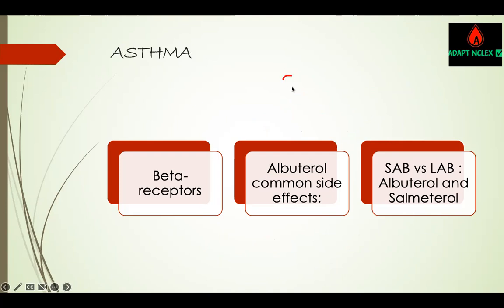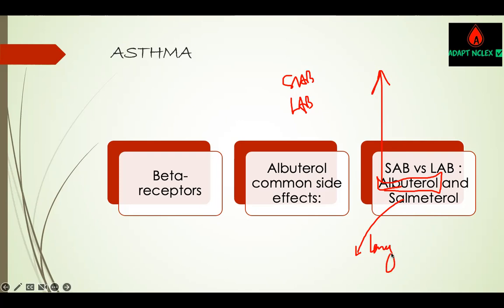There's SABA and LABA — short-acting beta agonist and long-acting beta agonist. The short-acting is albuterol. In the acute stage, we use albuterol, which acts right away — it's a rescue medication. Salmeterol is the long-acting beta agonist. So when they give you a SATA question about acute asthma, don't pick the long-acting — pick albuterol, the short-acting beta agonist.